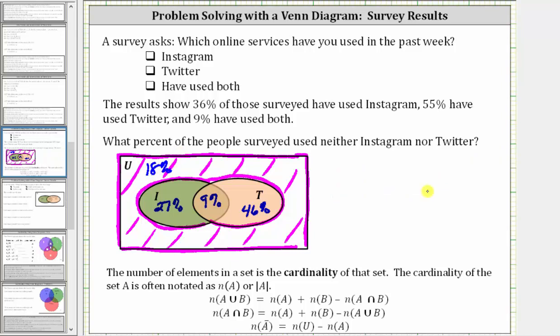Let's write the answer out as a sentence. 18% of the people surveyed used neither Instagram nor Twitter.